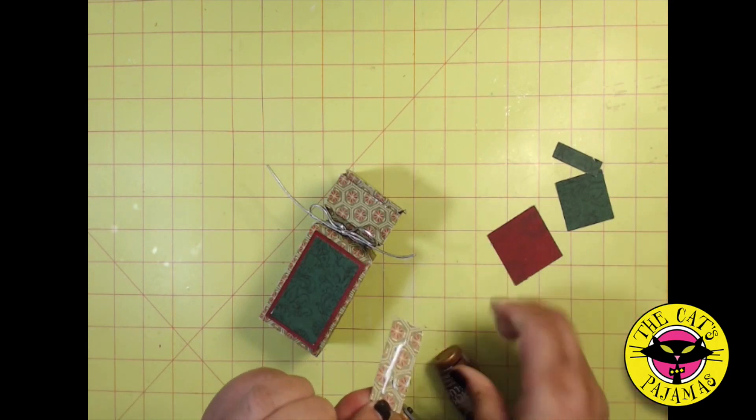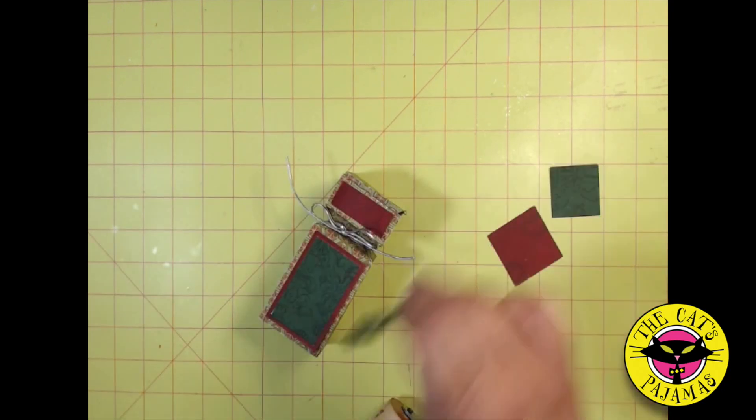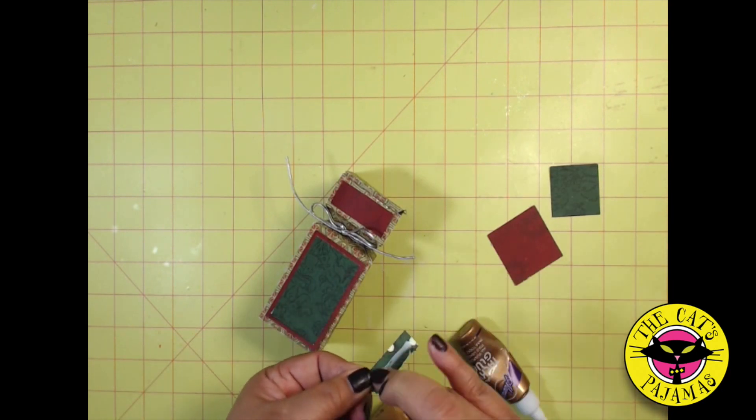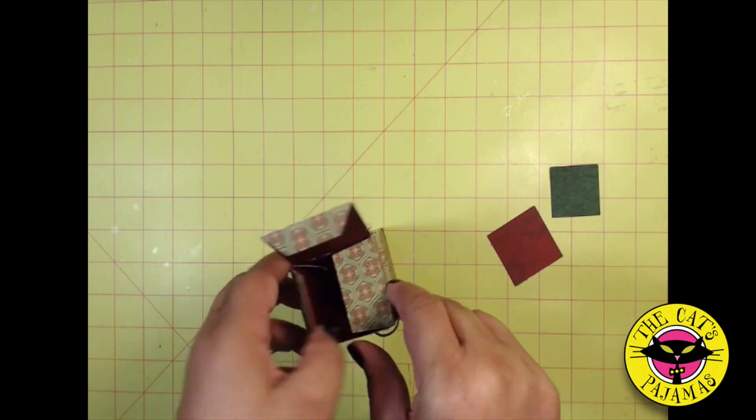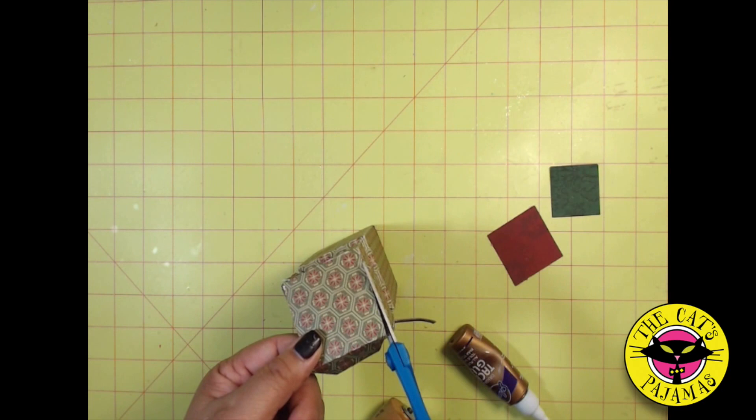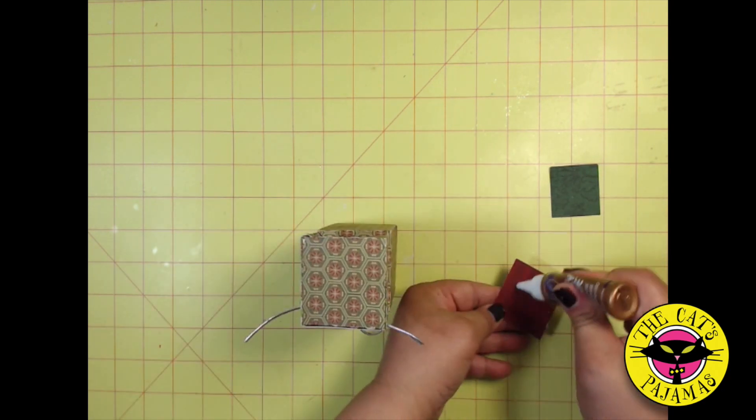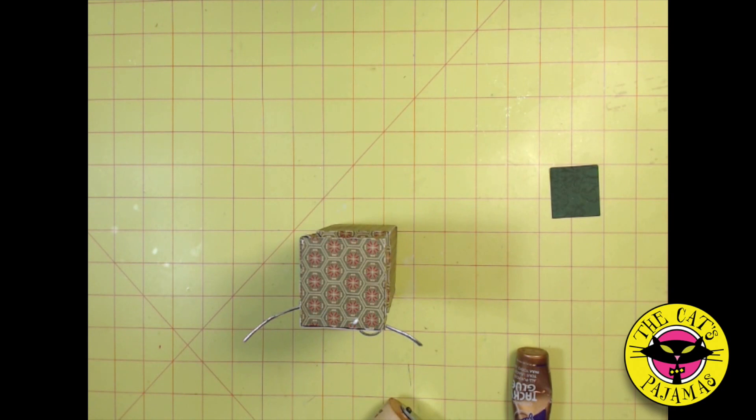Remember, you don't have to just put candy in here. You can put anything you want. You can put jewelry in here. You can put gift certificates. Whatever you like. I like the fact that the top has a little box in it too. You can easily add things in and things won't fall out.